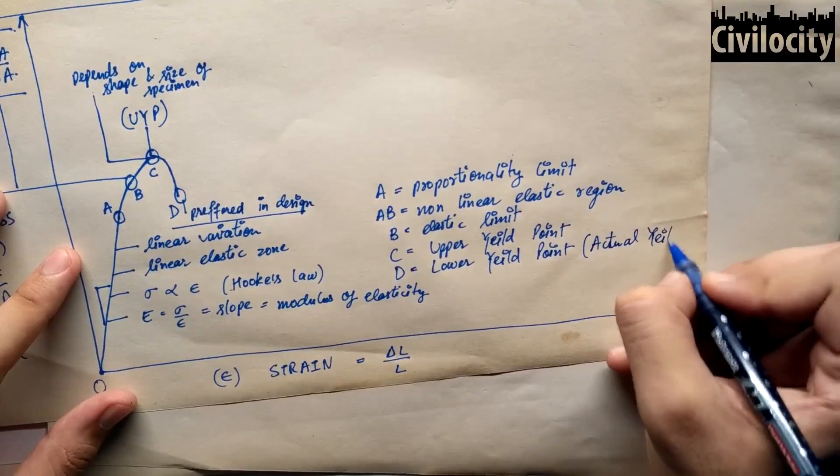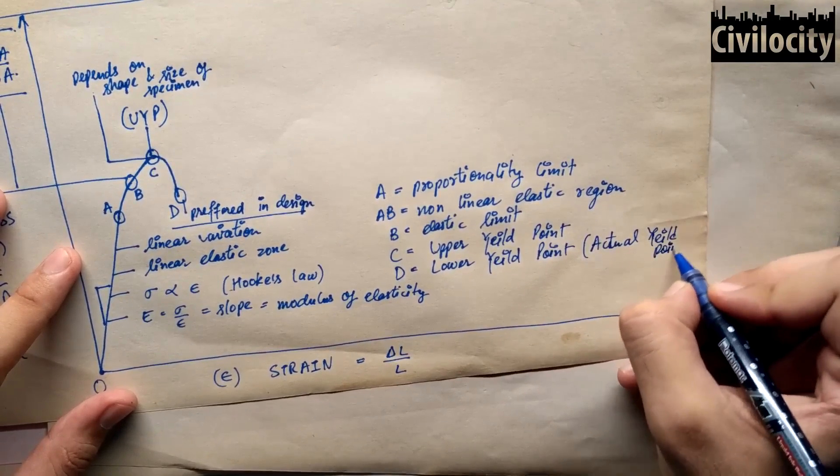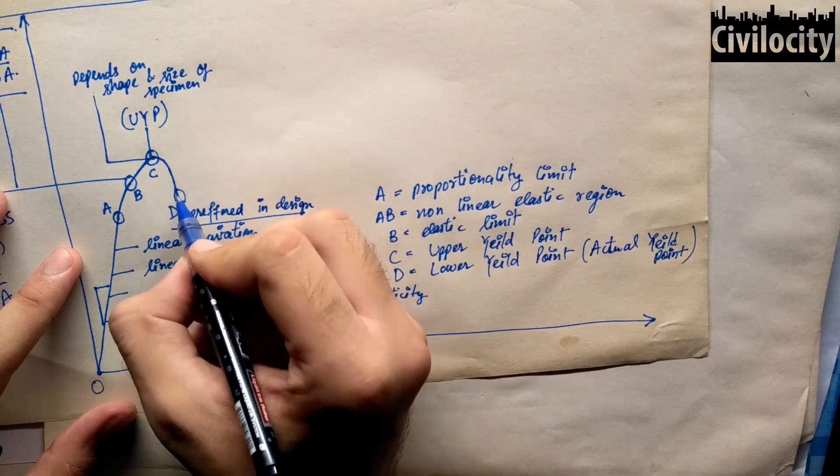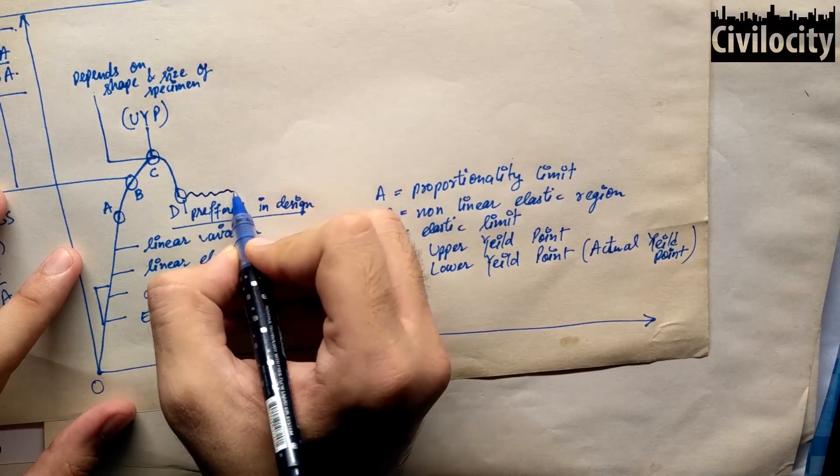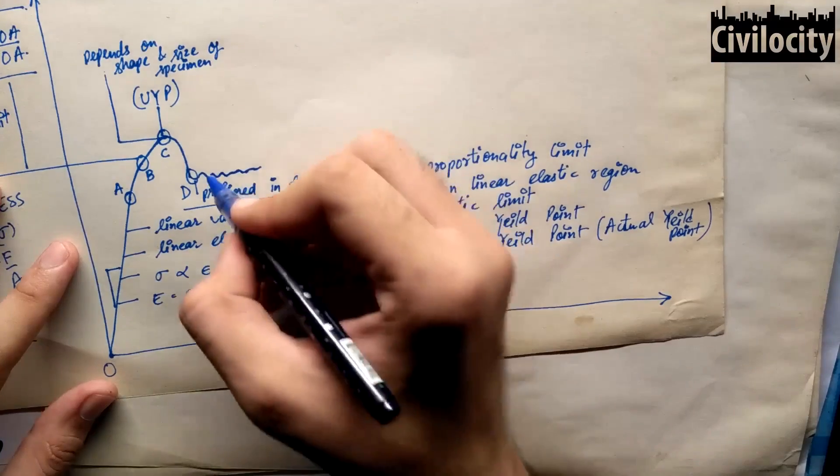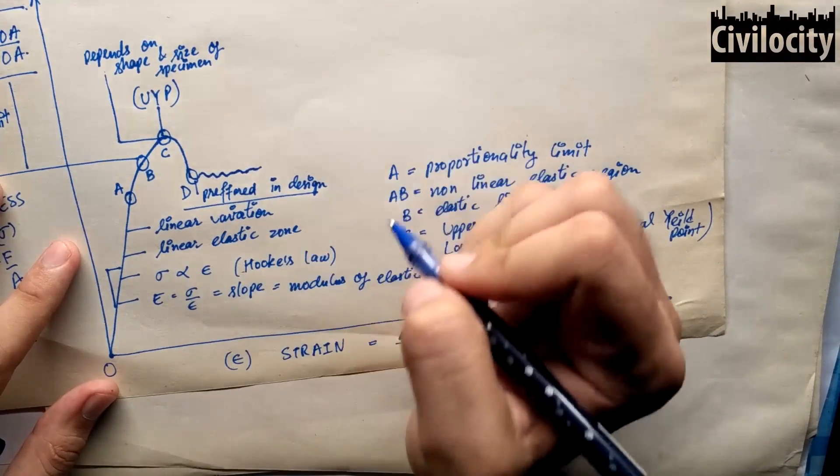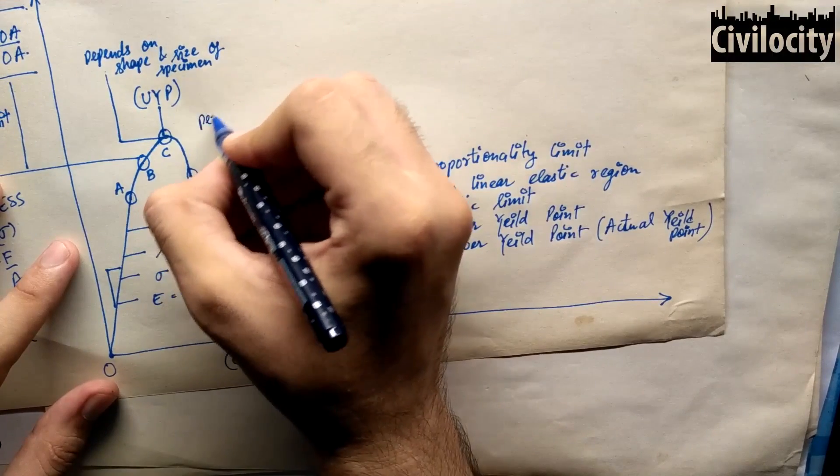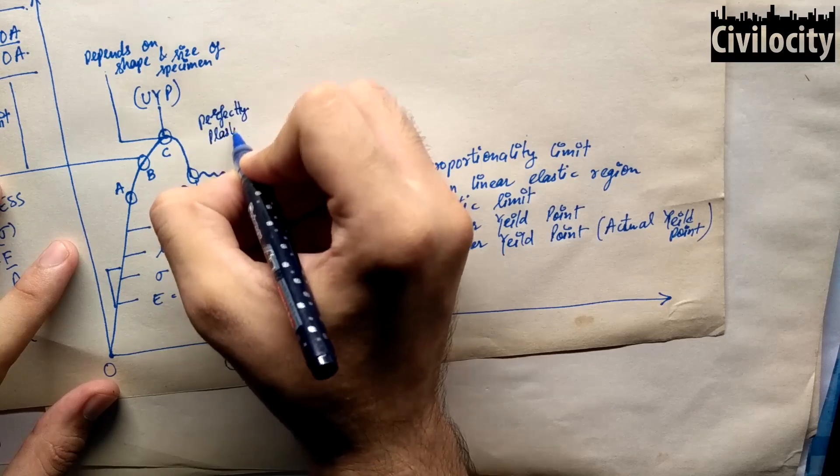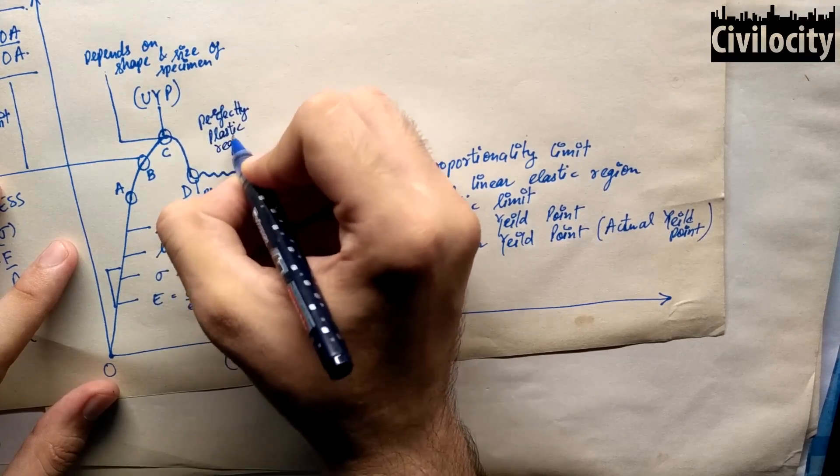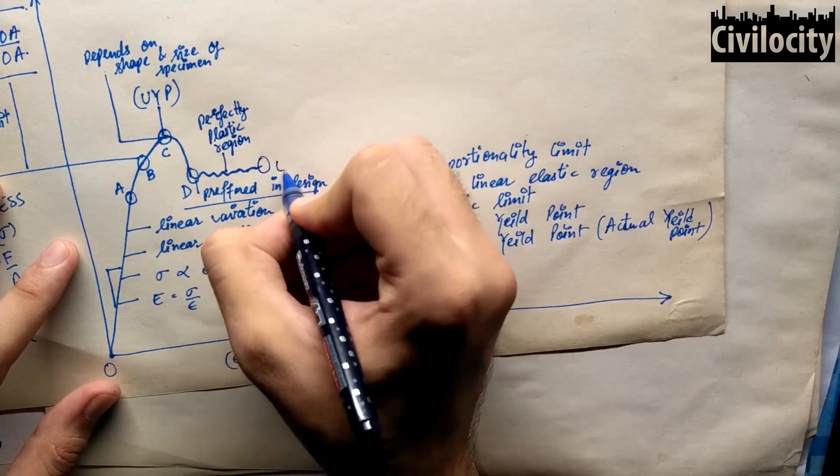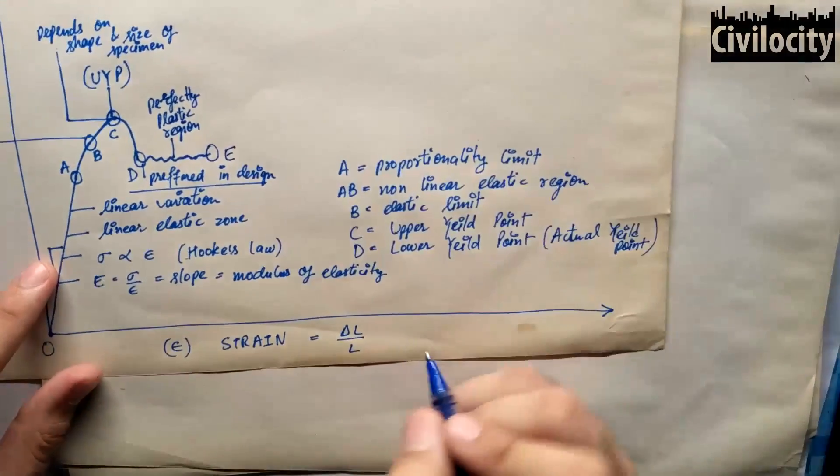This point is known as the actual yield point of our mild steel specimen. After this point D, on a very small increase in load, the deformations are very large as compared to the load applied, which means that the strain values are very large compared to the stress applied. This region indicates the permanent deformation in our mild steel specimen and is called the perfectly plastic region and it continues up to point E.